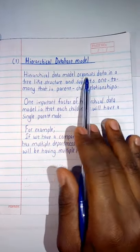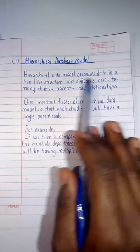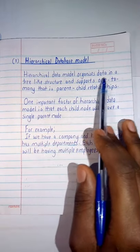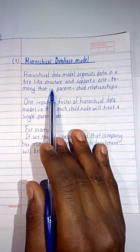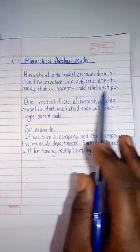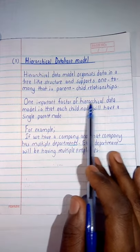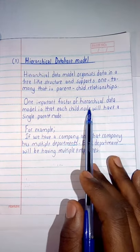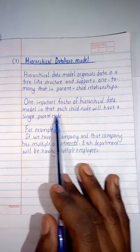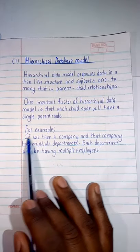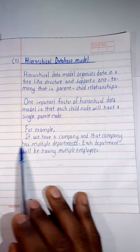What does it mean? A hierarchical data model organizes data in a tree-like structure and supports one-to-many, that is to say, like the parent-child relationship. So here, one important factor of hierarchical data model is that each child node will have a single parent node.